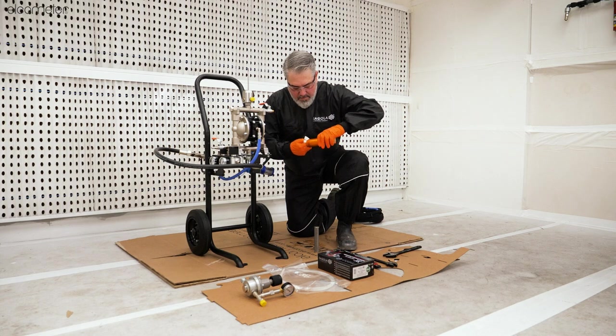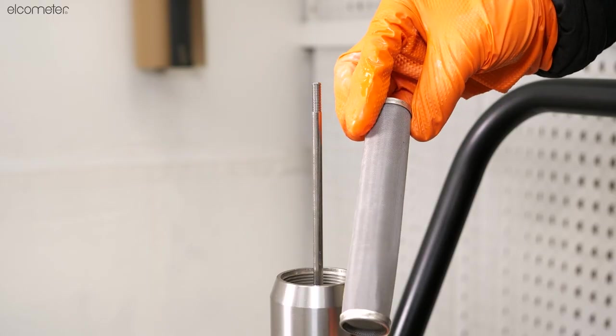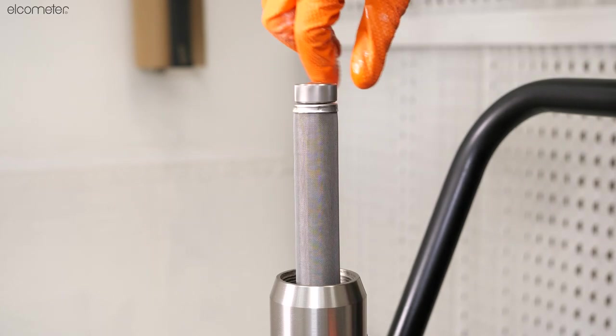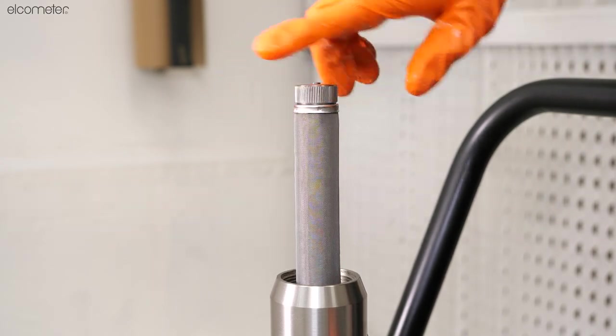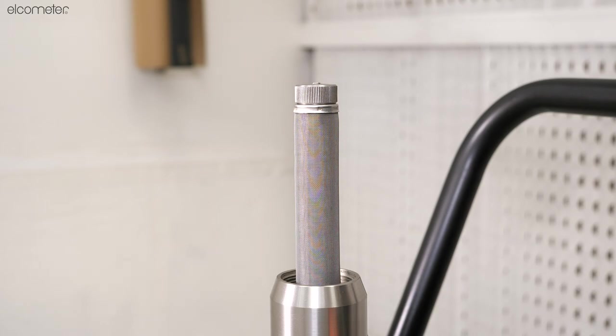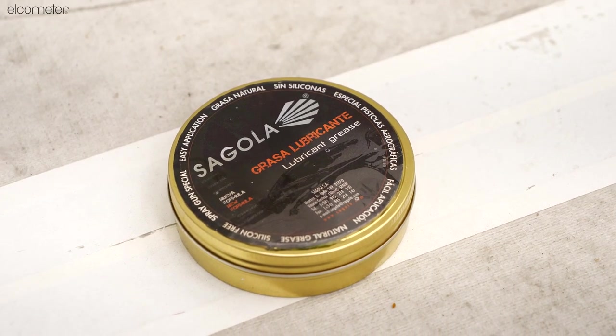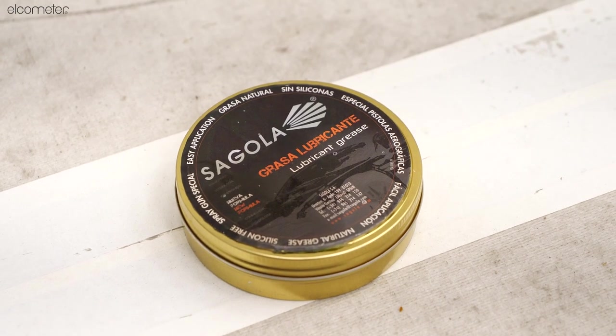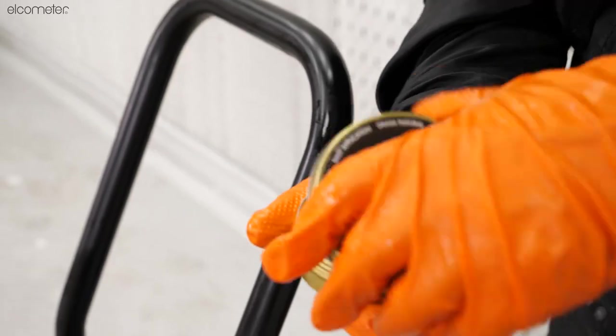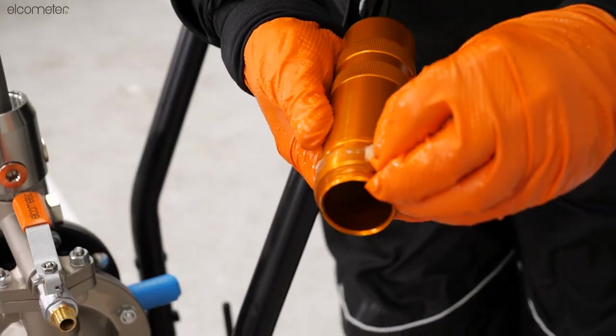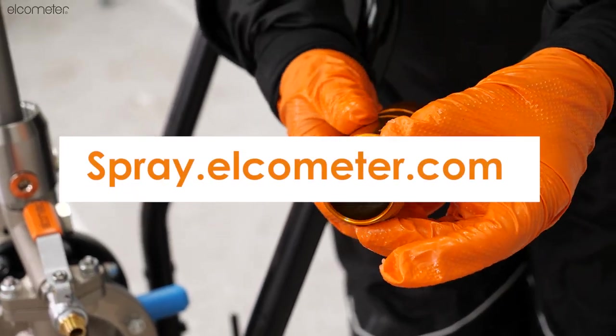Once you are satisfied that the filter core is suitable, guide it back over the stem, ensuring you are reapplying it in the correct orientation. Do not wipe off any lubricant on the filter housing threads. We use non-silicon lubricant on the filter threads to prevent paint from building up around the threads. If you require more lubricant, it is available on our dedicated spray website, spray.elcometer.com.